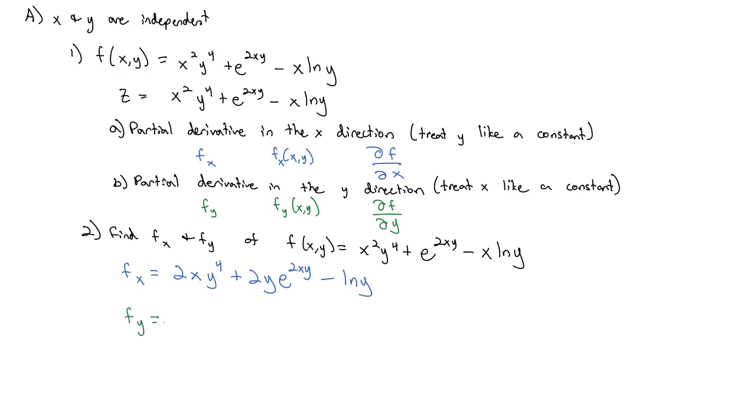What's happening in the y direction? Well, going back to our original function, x squared is now the constant, and y to the fourth is what we're going to take the derivative of. It's 4y to the third with the constant x squared tacked on.